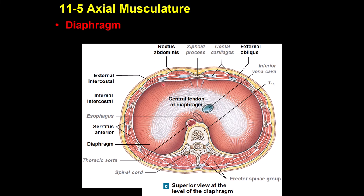The diaphragm is the primary muscle of inspiration. When it contracts, the thoracic cavity increases in size, making the internal pressure negative so air enters. Oxygen goes into the thoracic cavity. If this muscle is paralyzed, the person cannot survive — it is a very important muscle.